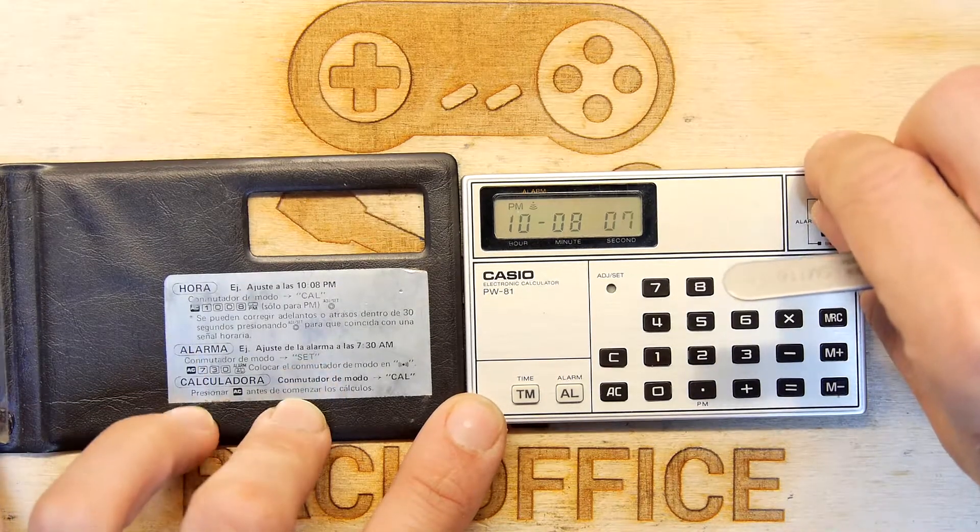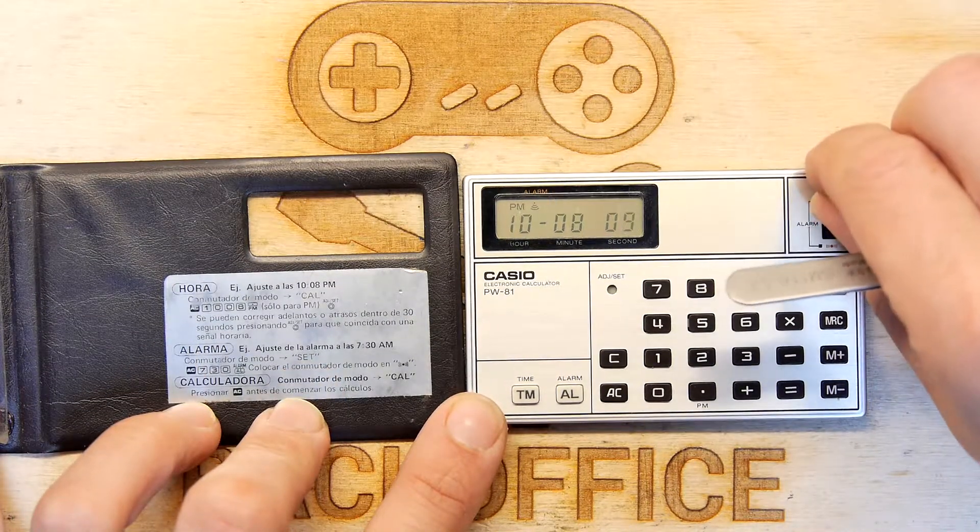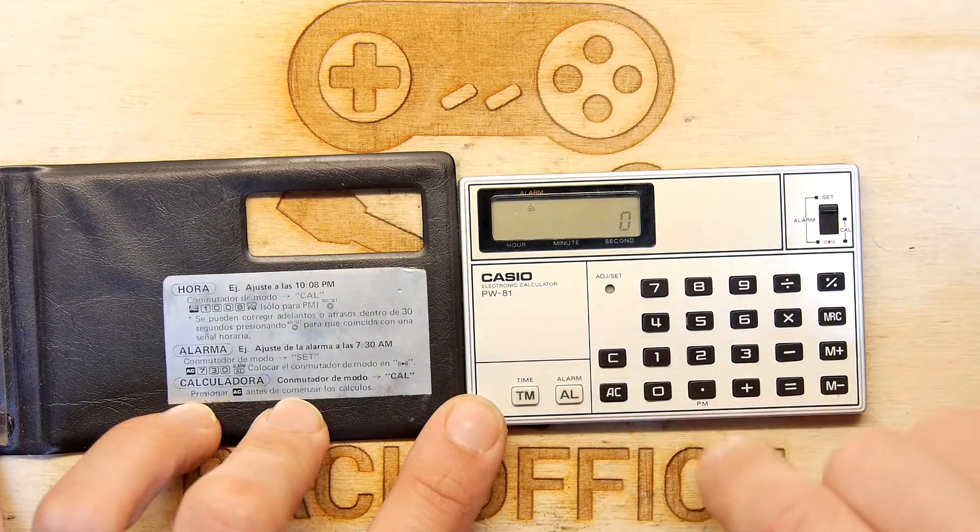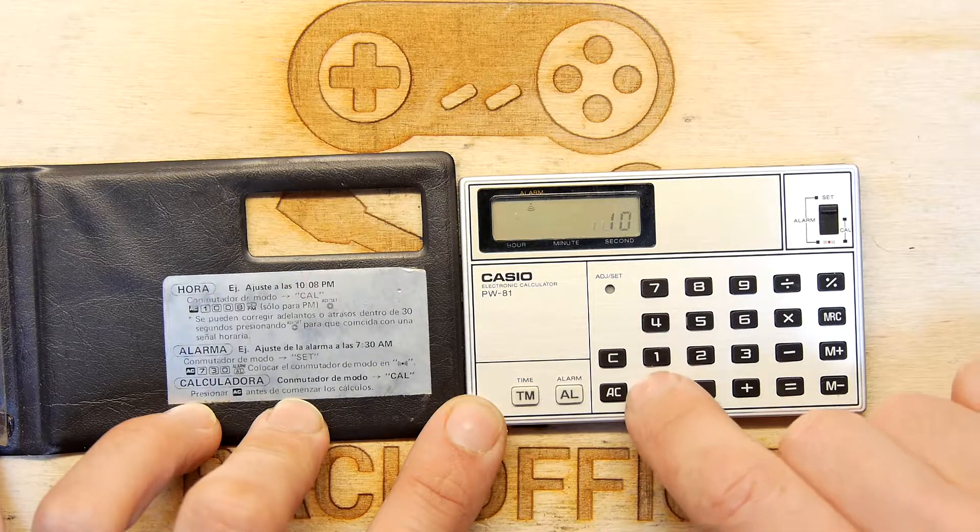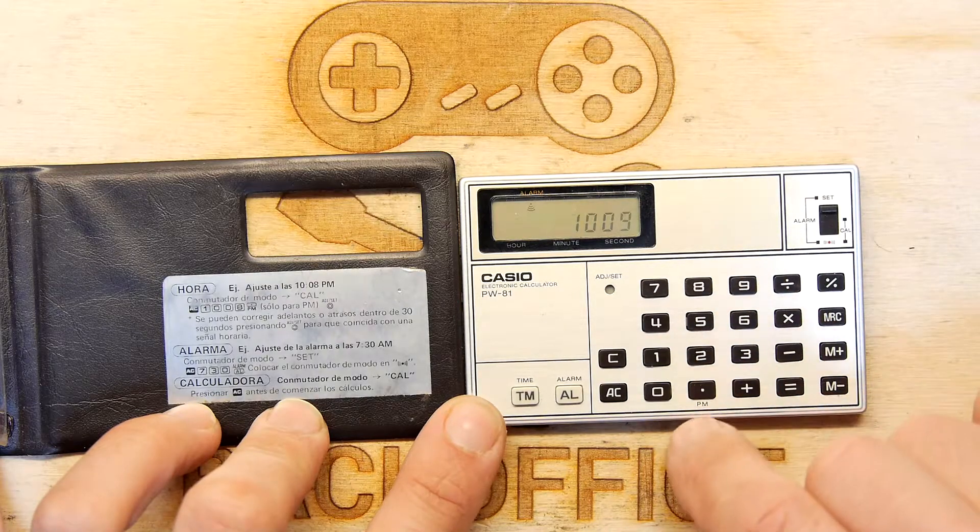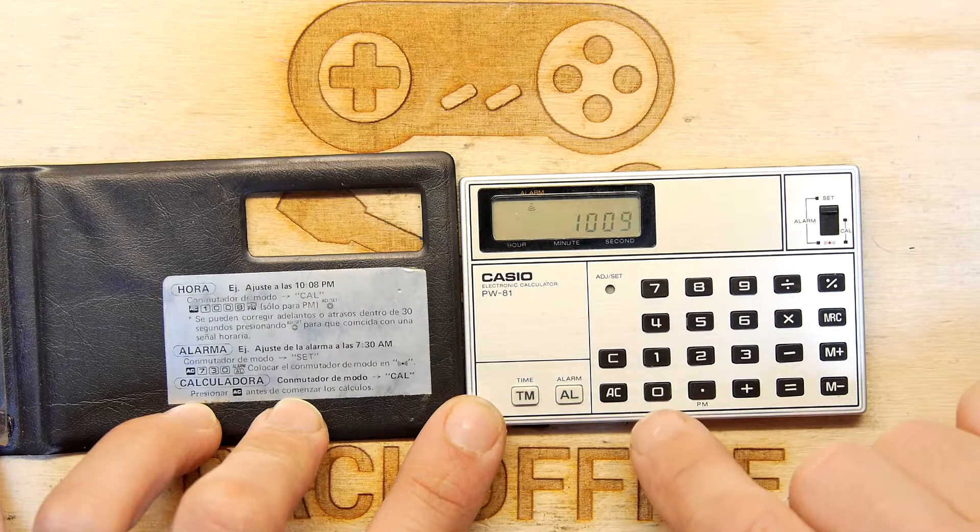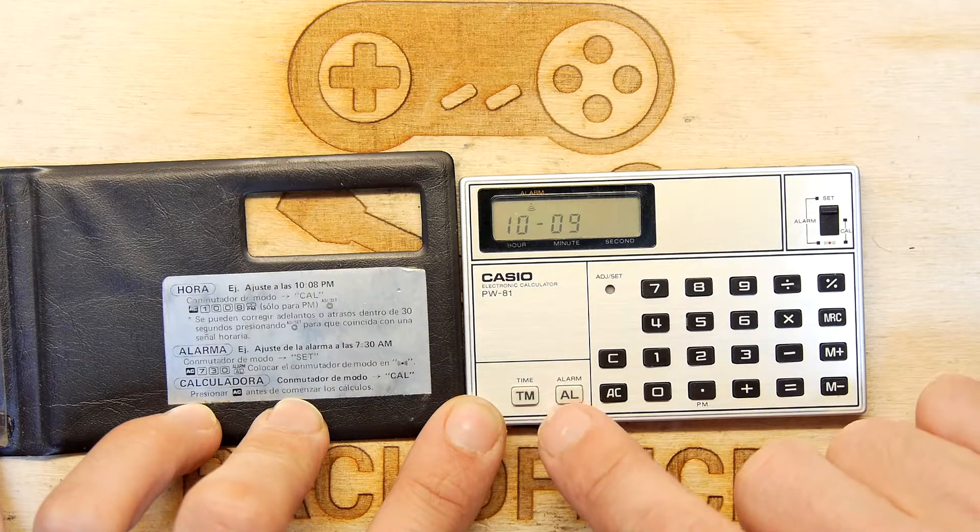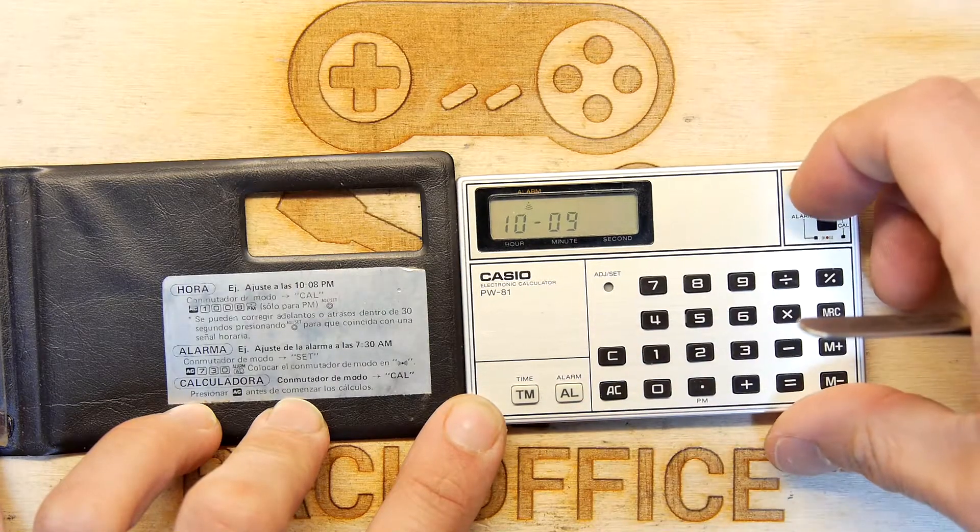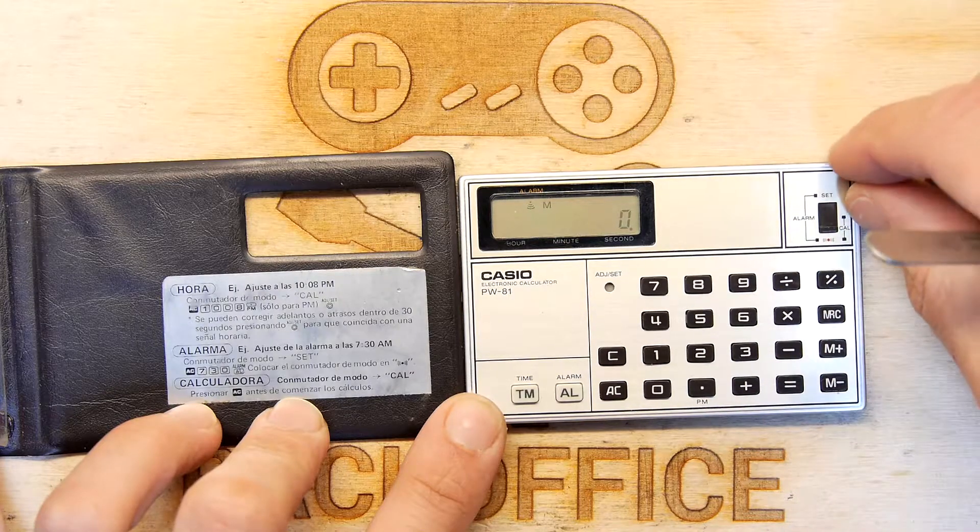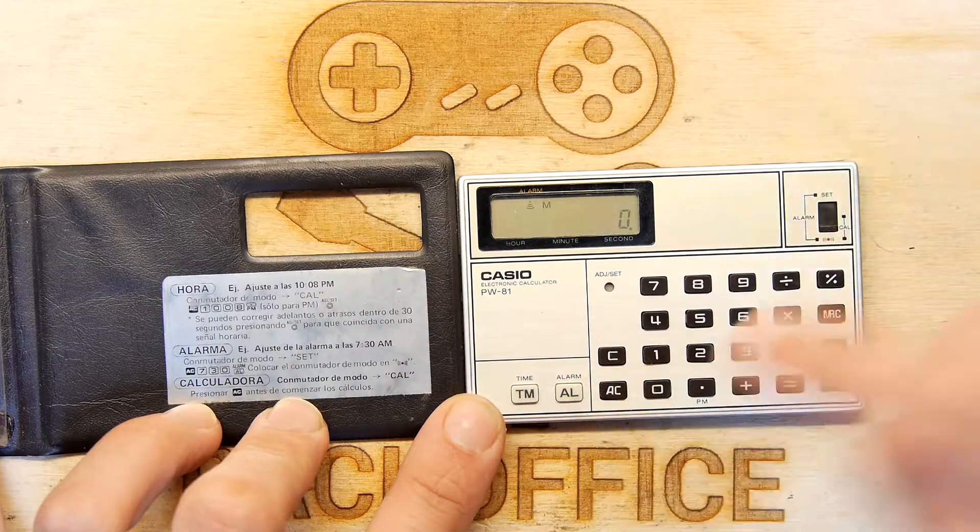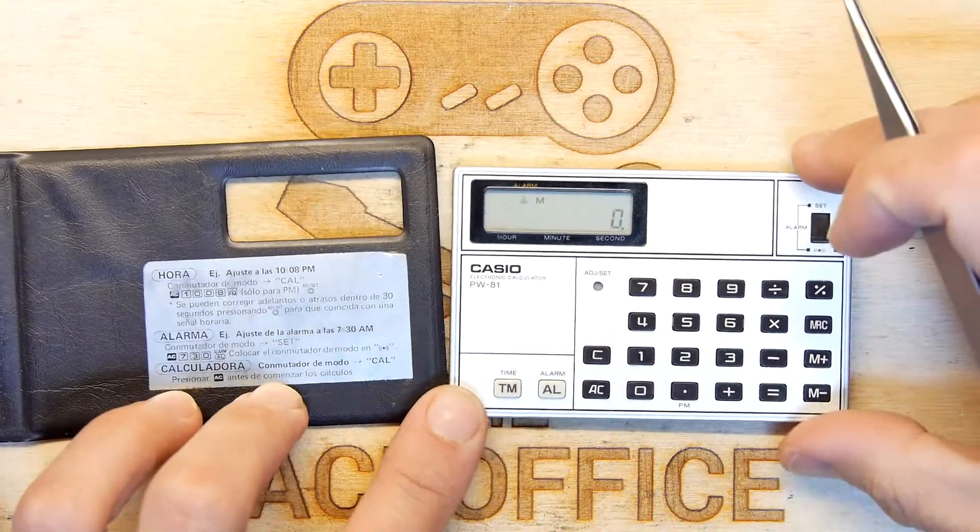So let's set the alarm then. So we have an alarm thing, so we're going to push in the thing to set. We're going to push AC, 1009, alarm, and then we're going to put this to on. So hopefully, I think that means the alarm should be on. It's in calculator mode now.